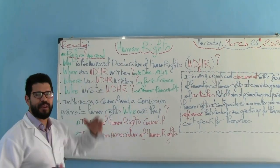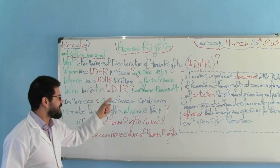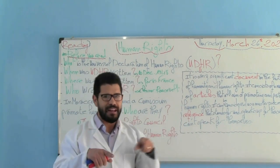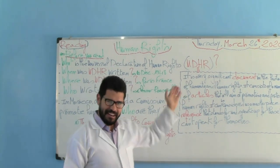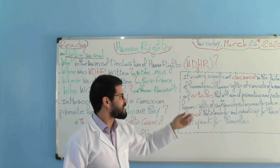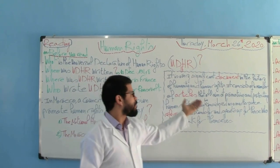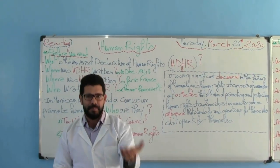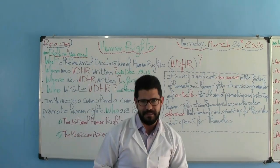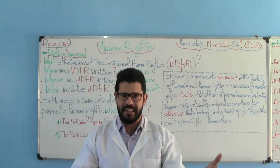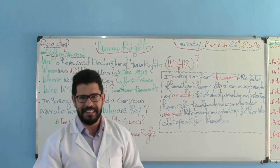Before we read, there are five pre-reading questions that we need to come up with good answers to. Number one: What is the Universal Declaration of Human Rights? The UDHR by definition is a very significant document in the history of humanity and human rights. It consists of a number of articles that all aim at promoting and protecting human rights. It can be considered as a masterpiece reference that speaks out for those who can't speak for themselves.